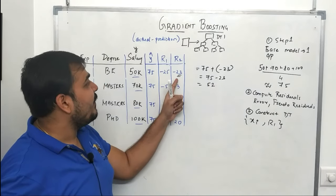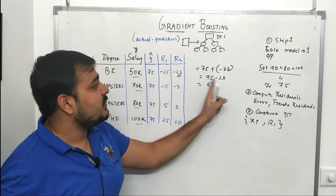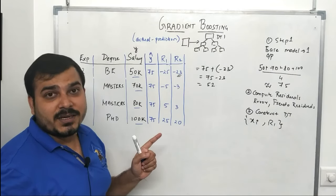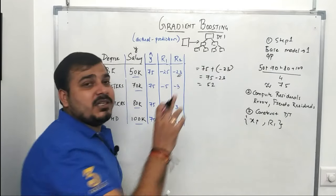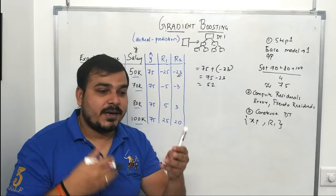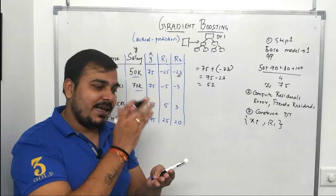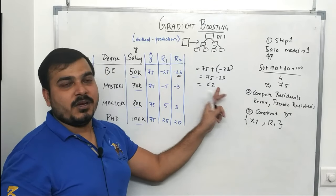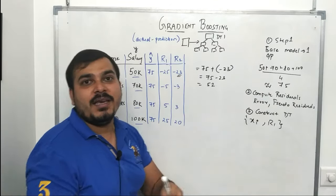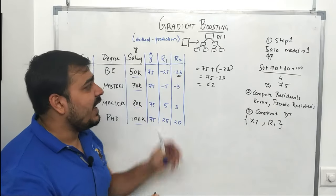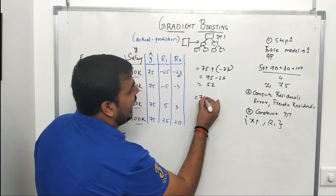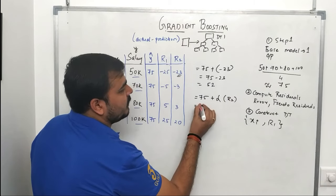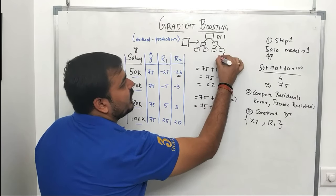If residual 2 were minus 25, then 75 minus 25 equals 50, perfectly matching the training data — clearly overfitting. We need a generalized model with low variance and low bias. To prevent overfitting, when adding the residual we multiply it by a learning rate alpha, which ranges between 0 and 1.